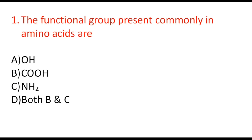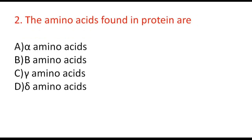Our first question is: the functional group present commonly in amino acids are — OH group, COOH group, NH2 group, or both B and C? The functional groups which are commonly present in amino acids are the carboxylic group (COOH) and the NH2 group, known as the amino group. So the correct option is D, both B and C.